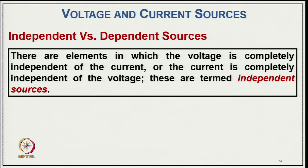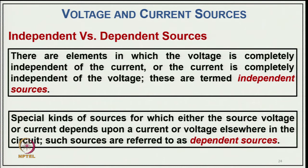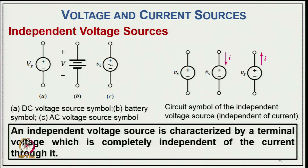Independent sources are elements in which the voltage is completely independent of the current, or the current is completely independent of the voltage. Dependent sources are special sources where the source voltage or current depends upon the current or voltage elsewhere in the circuit. The symbol of an independent voltage source includes the DC voltage source symbol, the battery symbol, and the AC voltage source symbol. An independent voltage source is characterized by a terminal voltage that is completely independent of the current flowing through it.